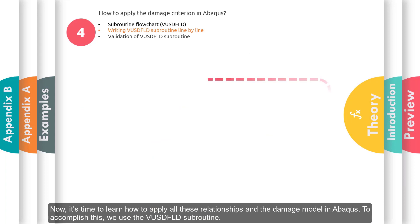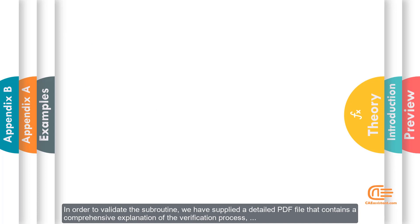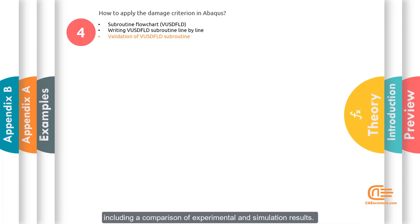Now it's time to learn how to apply all these relationships and the damage model in Abaqus. To accomplish this, we use the VUSDFLD subroutine. If you want to learn how to write this subroutine line by line, you should watch the full version of this tutorial, which I put the link in the description below. In order to validate the subroutine, we have supplied a detailed PDF file that contains a comprehensive explanation of the verification process, including a comparison of experimental and simulation results.